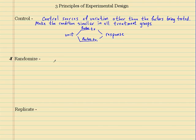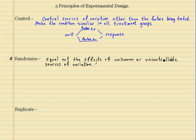And this randomize is very, very important. Because what this does is this will equal out the effects of unknown or uncontrollable sources of variation, or unknown factors or uncontrollable factors.